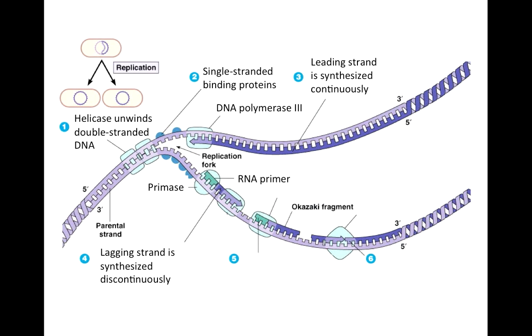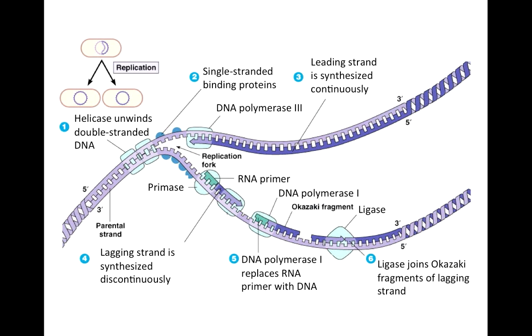An RNA primer is added by RNA primase, which is a type of RNA polymerase, to the lagging strand, which is synthesized discontinuously. DNA polymerase 1 functions to replace the RNA primers with DNA as the strand is being synthesized, and then ligase joins the discontinuous Okazaki fragments together.